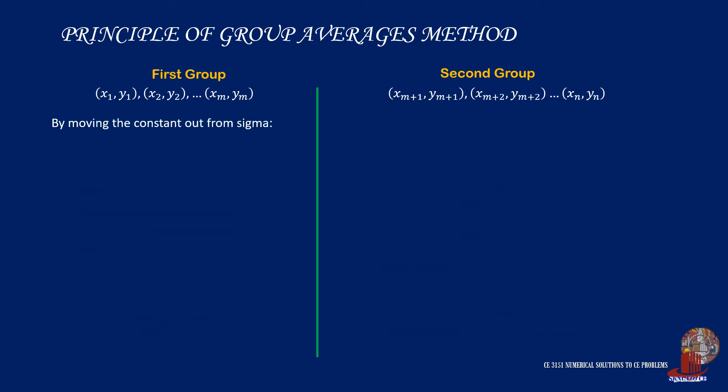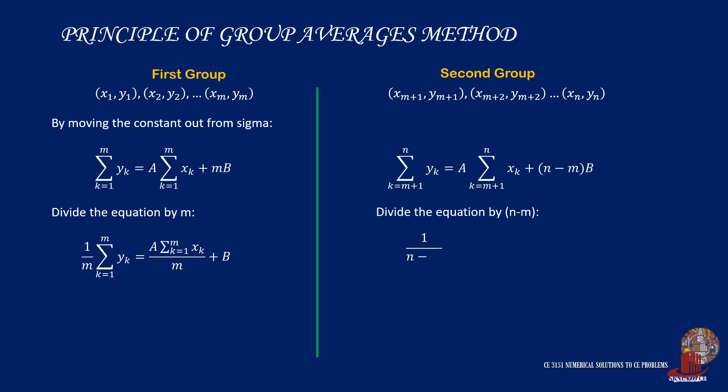We continue by extracting the constant out of the summation symbol. Thus, the first term will have a out of sigma x. But for the second term, as it is already a constant, we take the last term m as its multiplier. The same thing is done on the second group of points. Now, divide the first equation by m so it turns as the summation of y all over m is equal to the summation of x all over m plus b. The same thing happens on the other group.